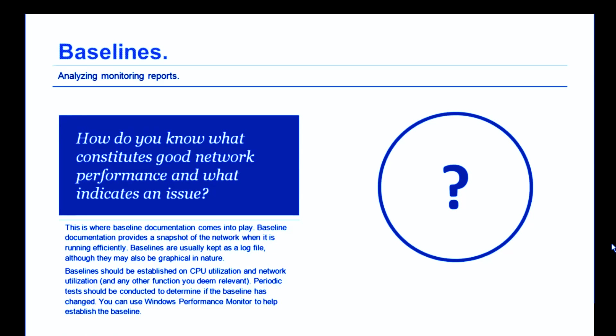How do you know what constitutes good network performance and what indicates that an issue is about to happen? This is where baseline documentation comes into play. Baseline documentation provides a snapshot of the network when it is running efficiently, at least hopefully when it's running efficiently. Baselines are usually kept as a log file.